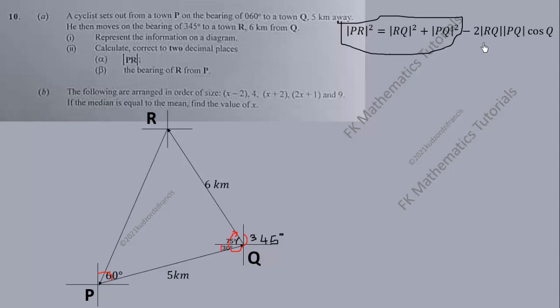This will give you the correct value regardless of the angle. This should give you the correct calculation of this side length. If it is 90, we usually ignore this because cos 90 is 0, which will give us |PR|² = |RQ|² + |PQ|².